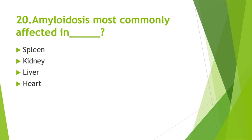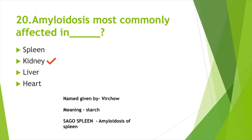Amyloidosis — most commonly affected organ: Option A: Spleen, Option B: Kidney, Option C: Liver, Option D: Heart. Answer: Option B, Kidney. The name 'amyloidosis' was given by Virchow; its meaning is 'starch.' Sago spleen = amyloidosis of spleen. Subarachnoid space ends at — Option A: L1, Option B: L2, Option C: L5, Option D: S2. Answer: Option D, S2. It is the space between the arachnoid membrane and pia mater, filled with CSF.